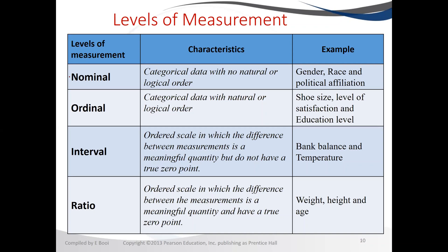Nominal and ordinal are both for qualitative data — they both come from qualitative variables. Interval and ratio both come from quantitative variables.